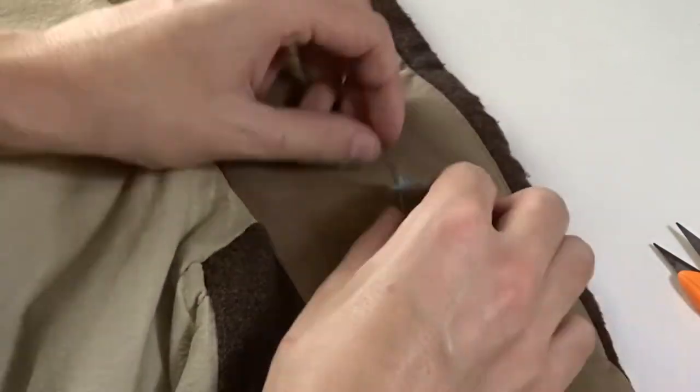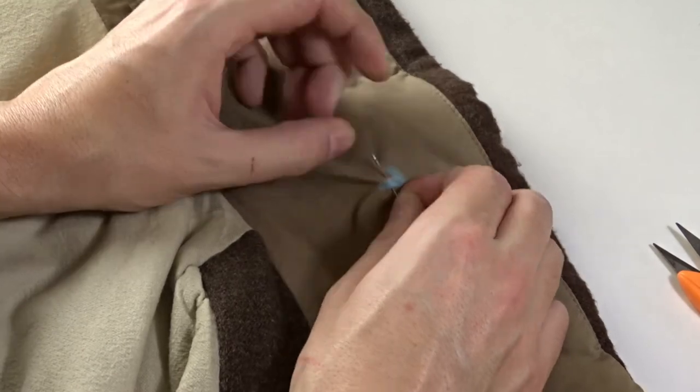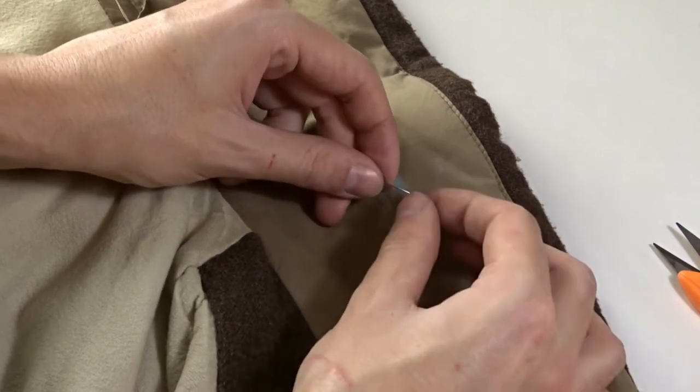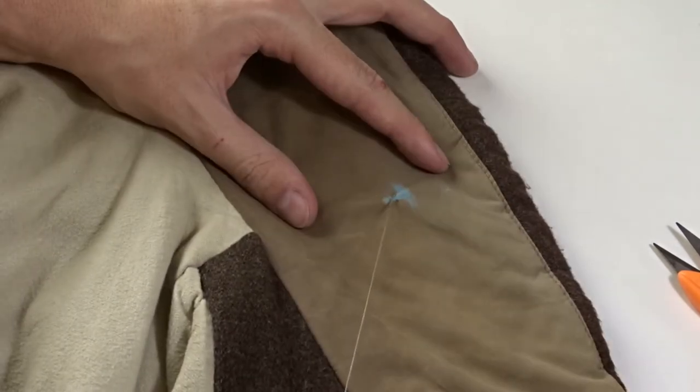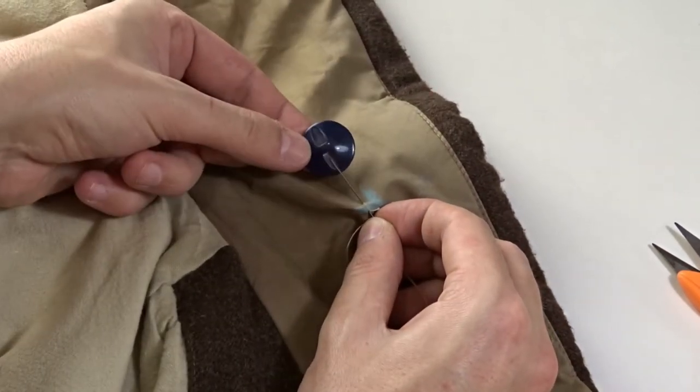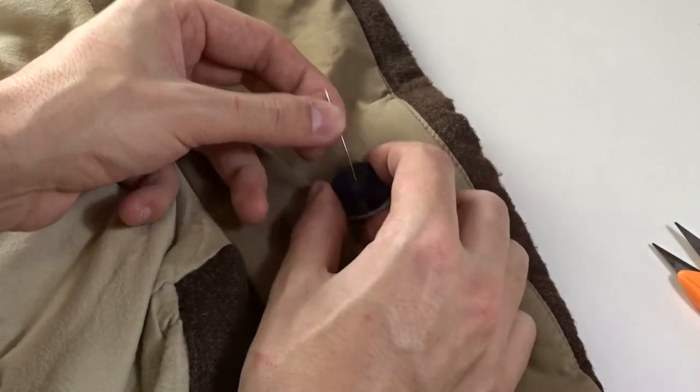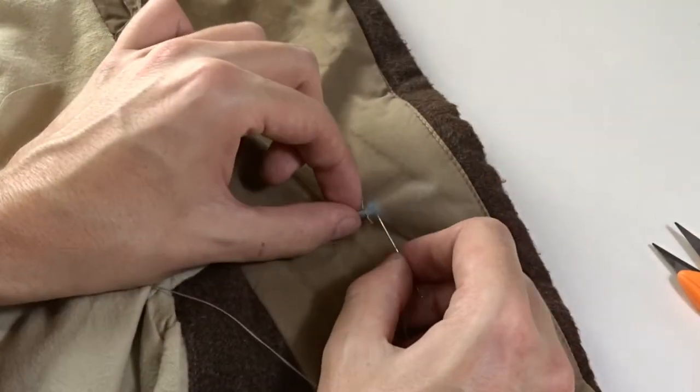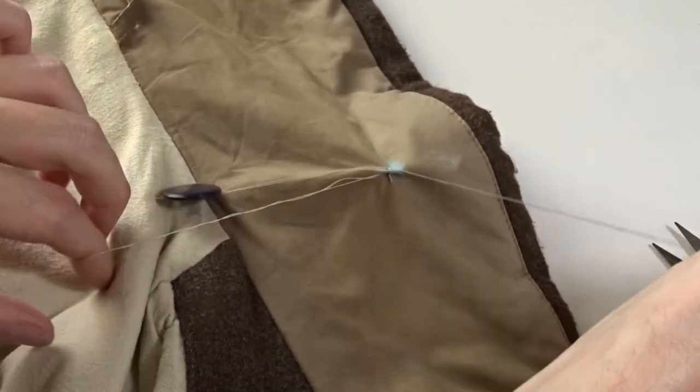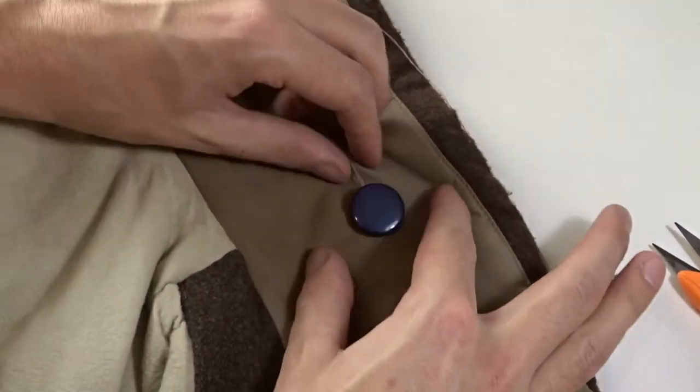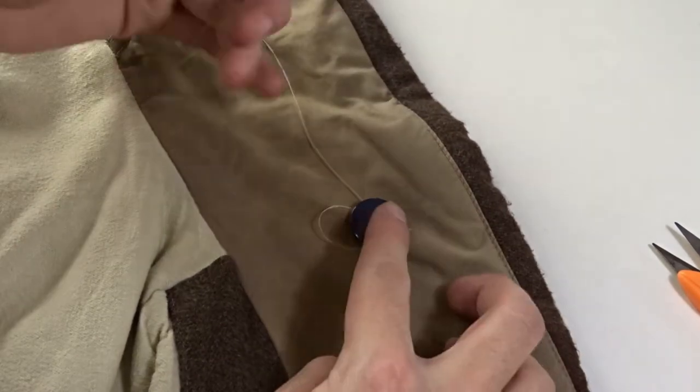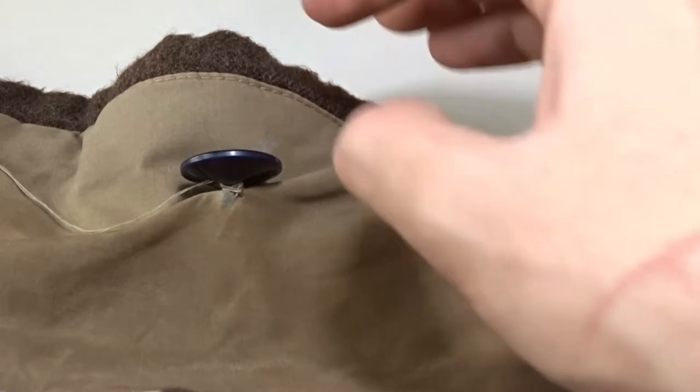Repeat these steps to sew the button on the other side of the collar. Sew the buttons to the fabric as tight as possible. This way they will sink into the fabric and won't be able to move.